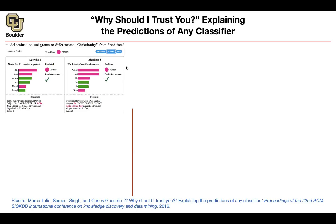I'm giving you two algorithms. They are trained on unigrams — unigrams correspond to single words in your sentences. You want to differentiate Christianity from atheism. There are two algorithms, the one on the left and the one on the right. The document that these two algorithms are receiving is the same — that's the input document — and the task is to classify it as Christianity or atheism.